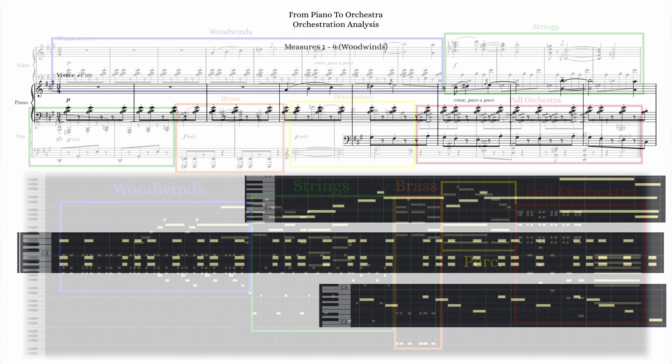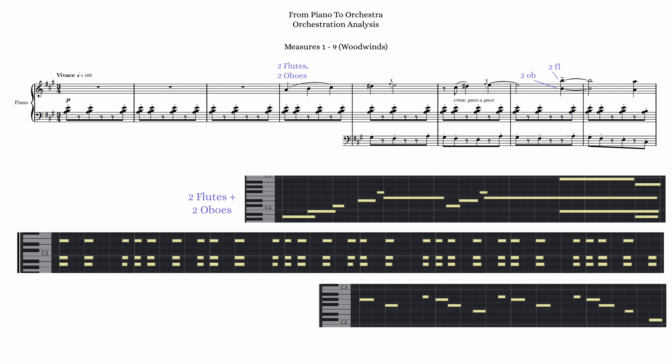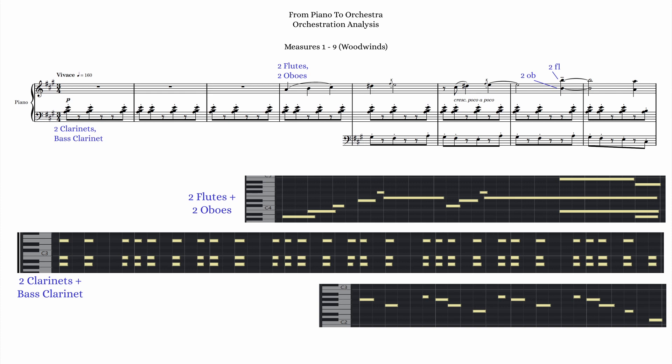There are 3 distinct elements to these first 8 measures, separated into individual staves. I gave the melodic figure starting in measure 4 to the flutes and oboes in unison. In measure 7, when they split into octaves, I gave the flutes the upper octave and oboes the lower octave. I gave the background 8th notes starting in measure 1 to 2 clarinets and a bass clarinet. If I were writing for a real orchestra, I probably would have chosen 3 Bb clarinets for a more uniform timbre and balanced dynamics, but it really doesn't matter too much.